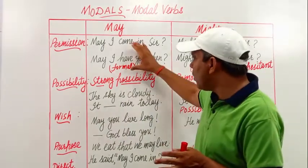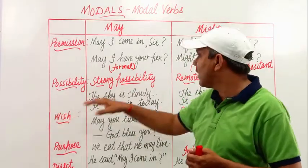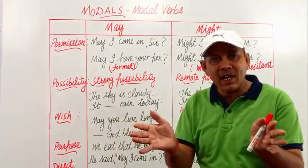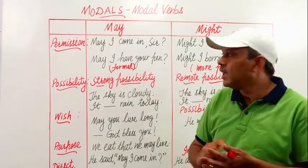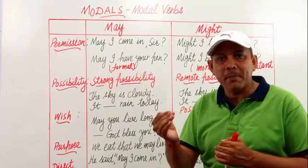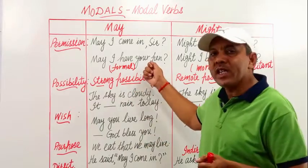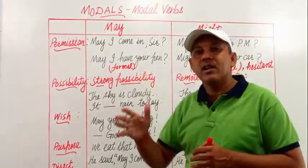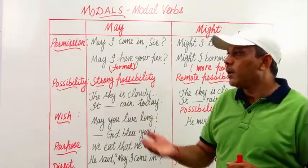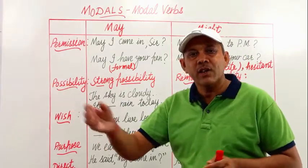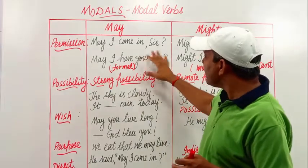For formal permission, we say 'May I come in, sir?' or 'May I have your pen?' For example, if we are in an exam hall and we need to ask a teacher for a pen, we have to ask in a formal way because he is a teacher and I am a student — 'May I have your pen, please?' He will definitely give the pen to you.